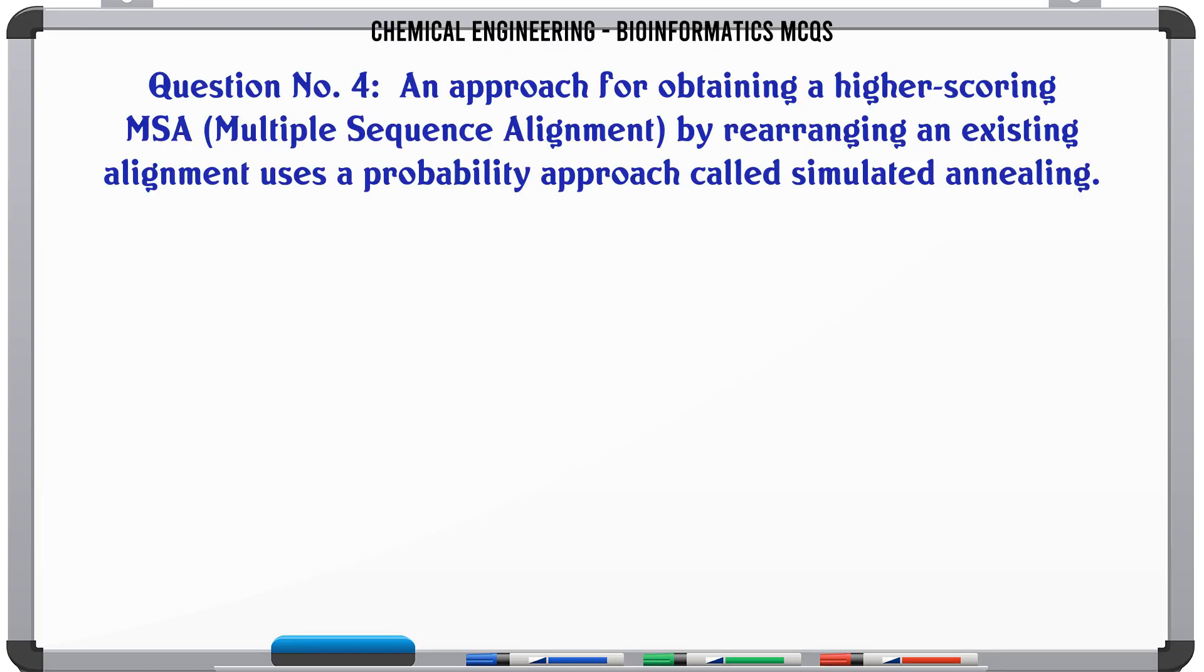An approach for obtaining a higher scoring MSA (multiple sequence alignment) by rearranging an existing alignment uses a probability approach called simulated annealing. A. True. B. False. The correct answer is: True.